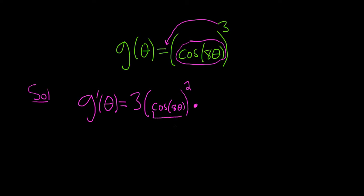So the inside function is cosine of 8 theta. The derivative of cosine is negative sine. So here we have to use the chain rule again, because it's cosine of 8 theta. So it'll be negative sine of 8 theta.